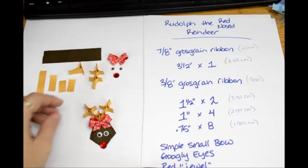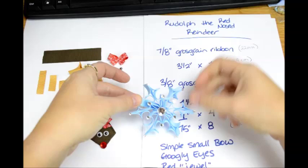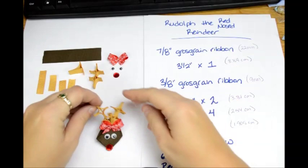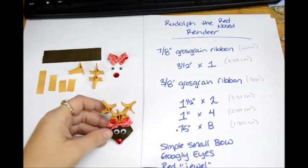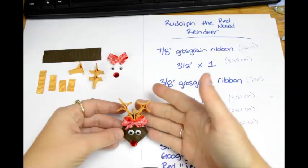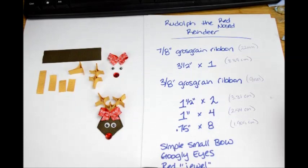For those of you who watched my ribbon sculpture for the snowflake, the antlers on the reindeer are basically the same thing, but I'm going to run through and show you how to do it. When I was making the snowflake, I got two of them together and thought, wow, those look like antlers. So my version of Rudolph was born.